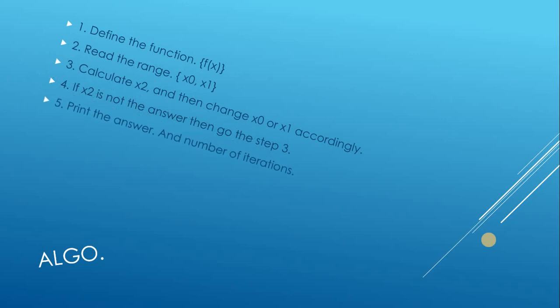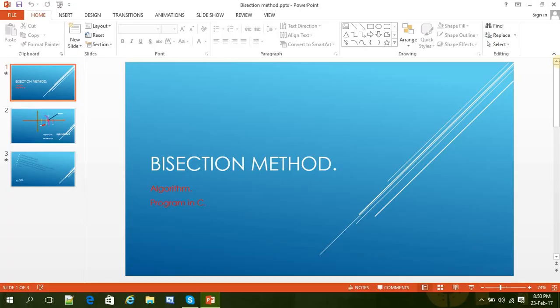The fifth one is just print the answer and number of iterations. Then stop. That is the algorithm. We have to do these five steps mainly. And then this, that's it.